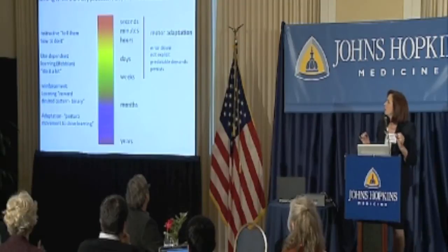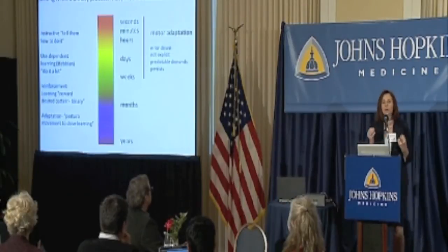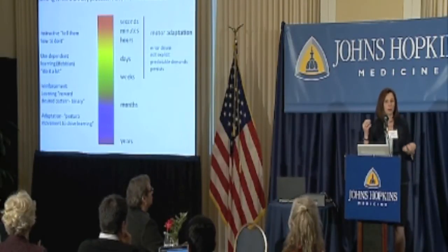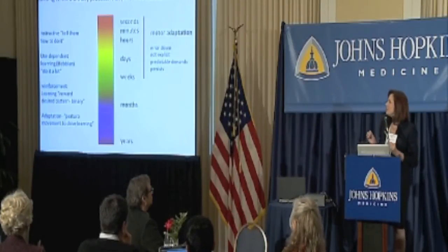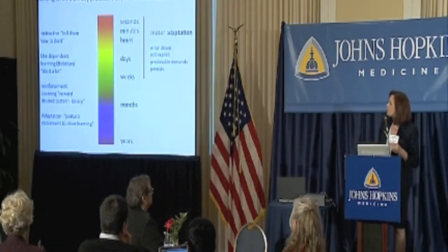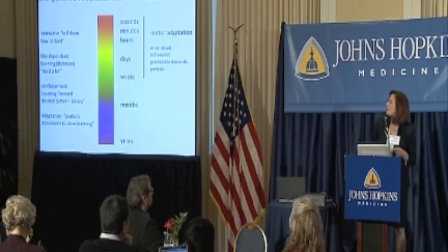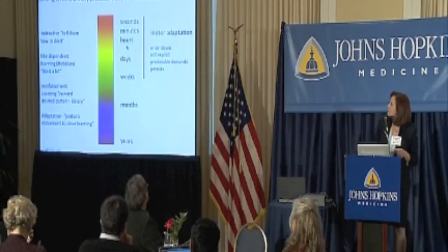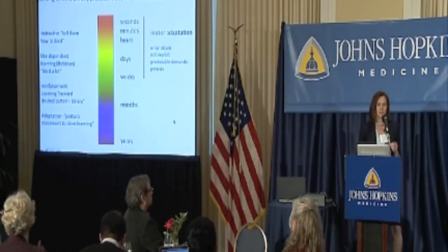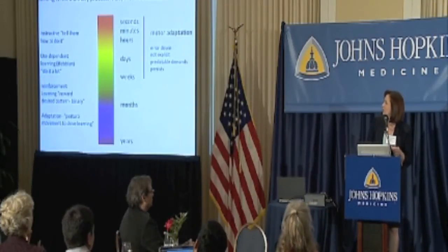Motor adaptation is a process of motor learning where you make errors, and those errors are corrected trial by trial — in this case, step by step. This learning doesn't have to be very explicit at all. You may not be able to tell me what you're doing to learn, but you know the movement feels better, more fluid, more stable. It's important that we drive this with predictable demands, and this kind of learning can persist over fairly long periods. We study this on timescales of minutes, hours, days, and weeks.